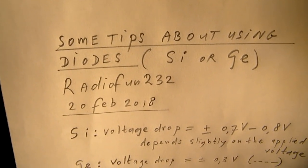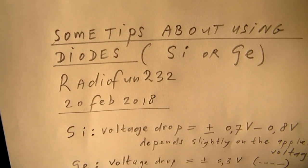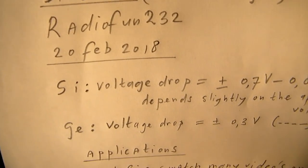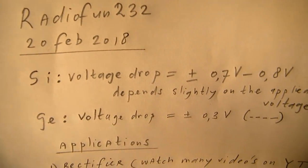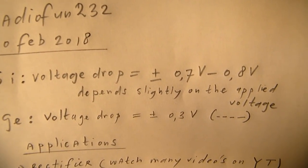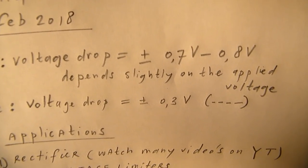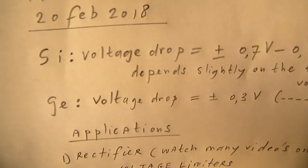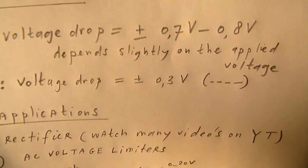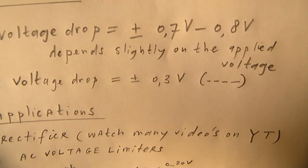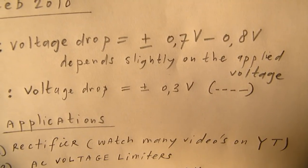In this video, some tips about using diodes, silicon or germanium. A silicon diode has a voltage drop from approximately 0.7 up to 0.8 volts, depending slightly on the applied voltage. Germanium diodes have a voltage drop of approximately 0.3 volts, also slightly dependent on the applied voltage.